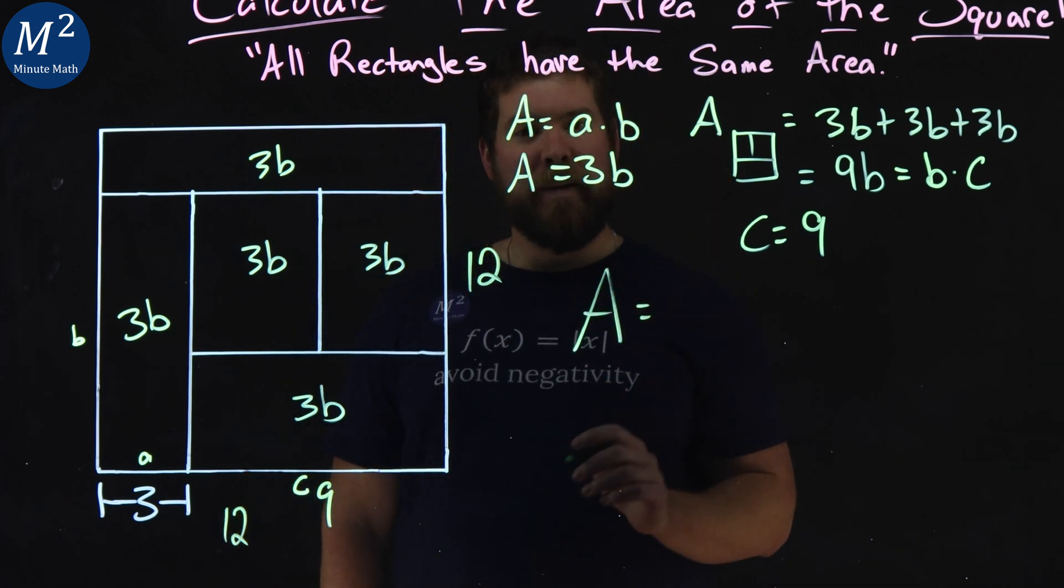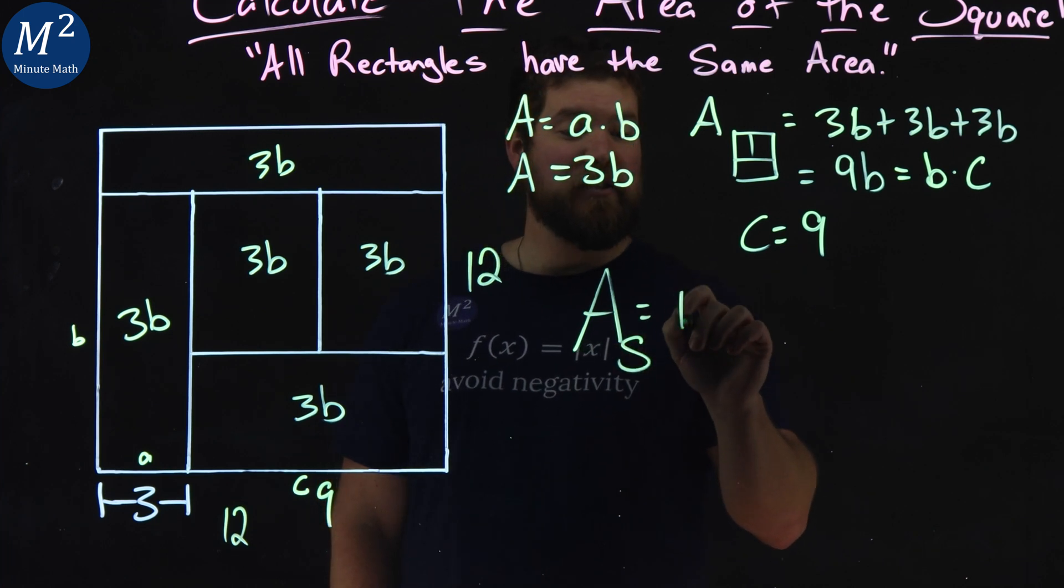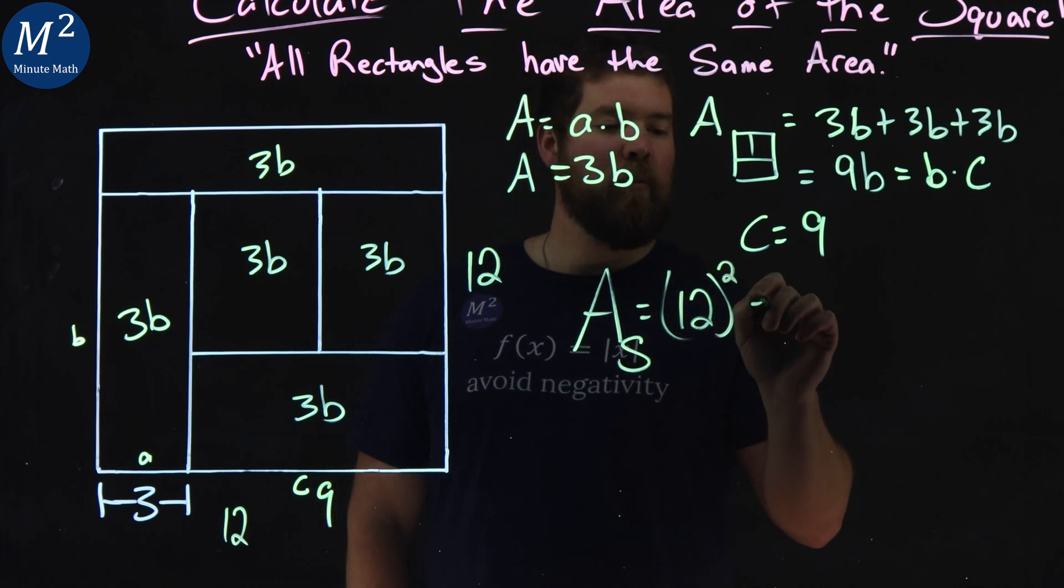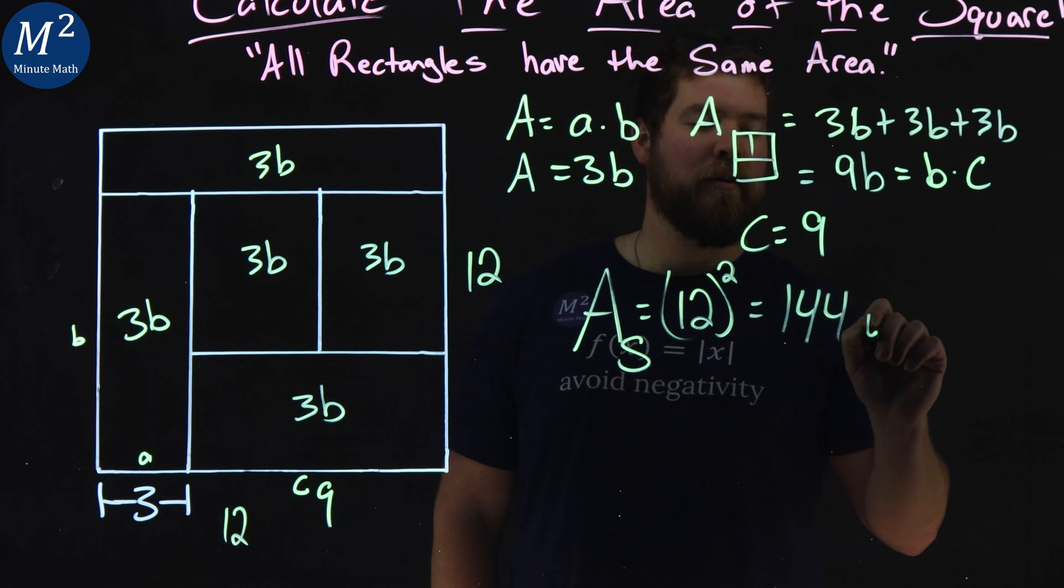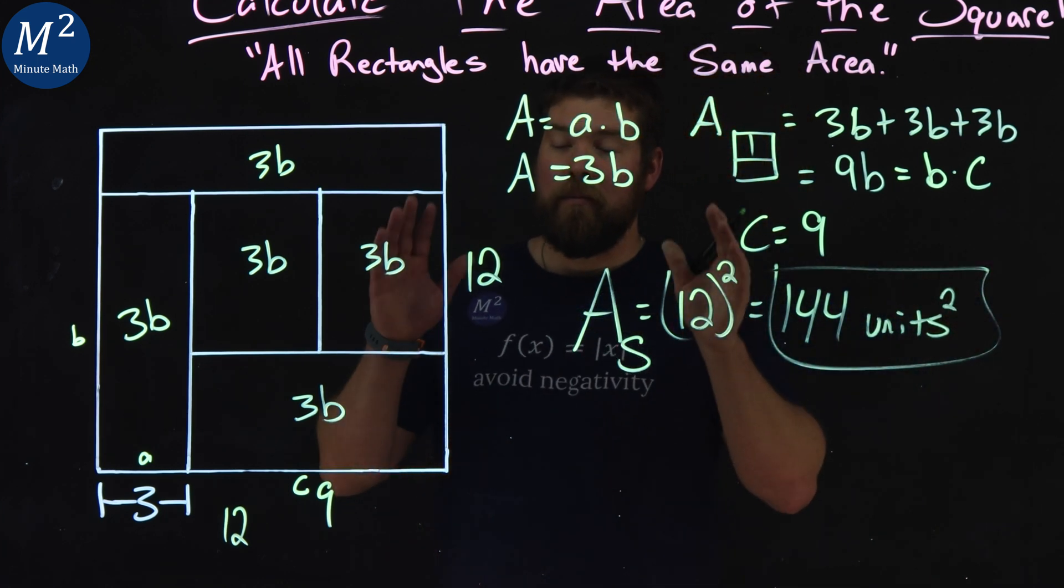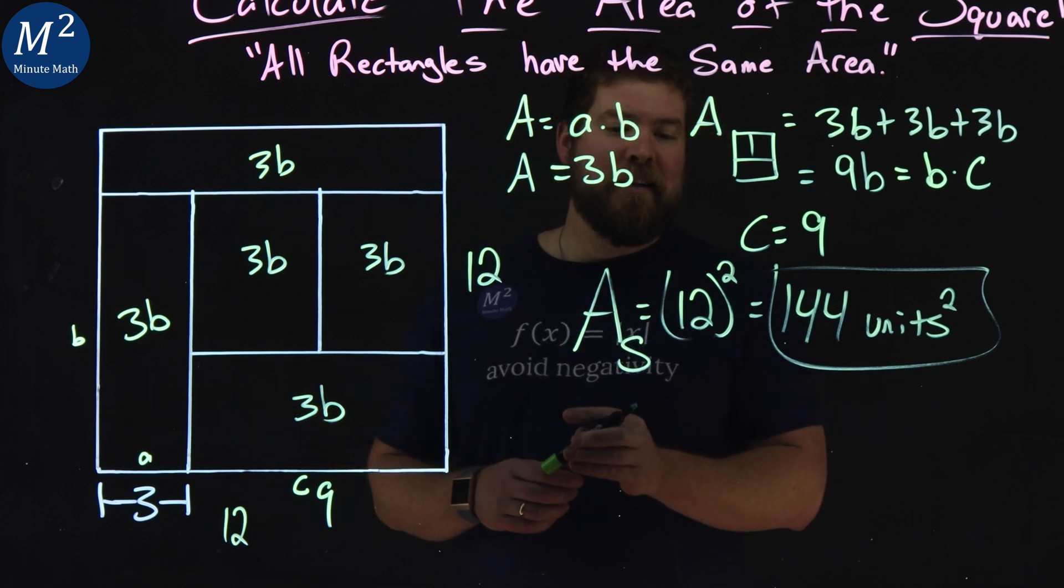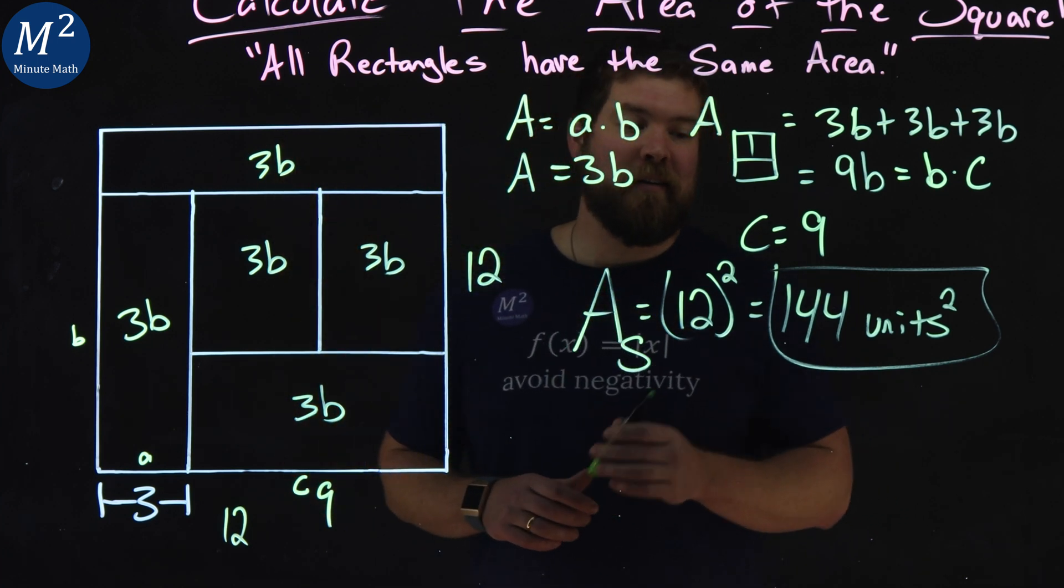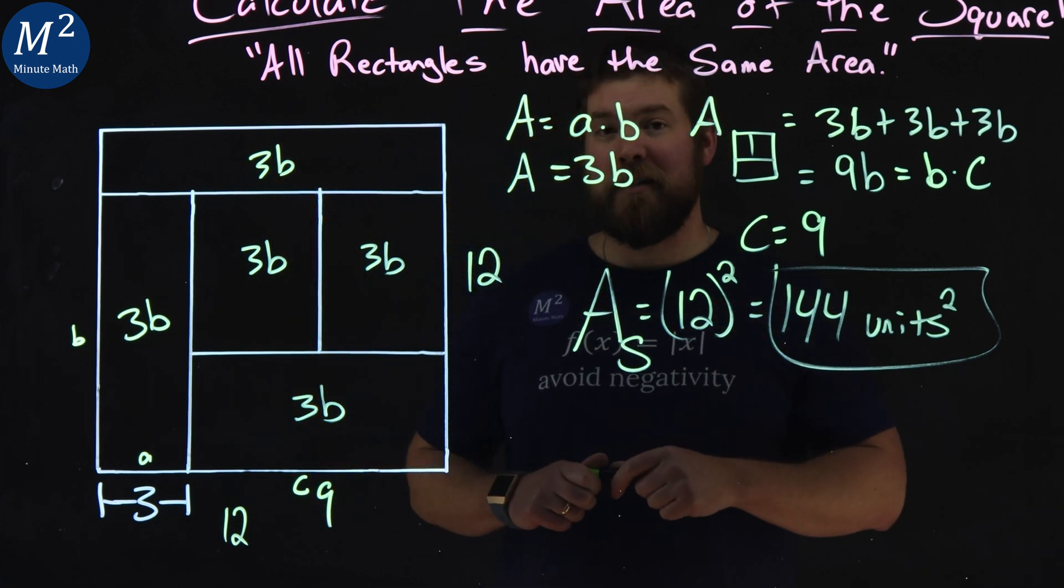And so the area of our big square is 12 squared, which is 144 units squared. And there we got it. We used math and knowledge here to determine that the overall area of the square is 144 units squared.